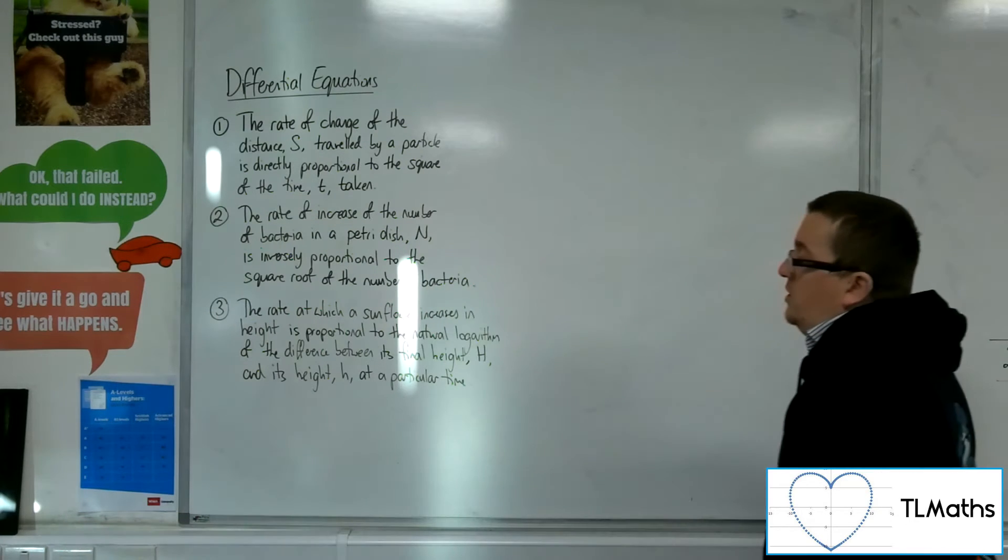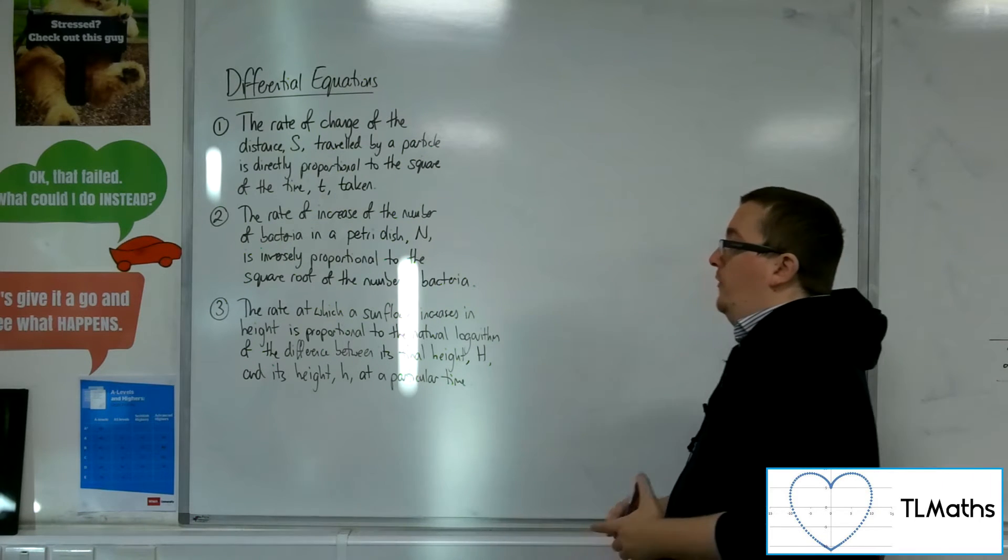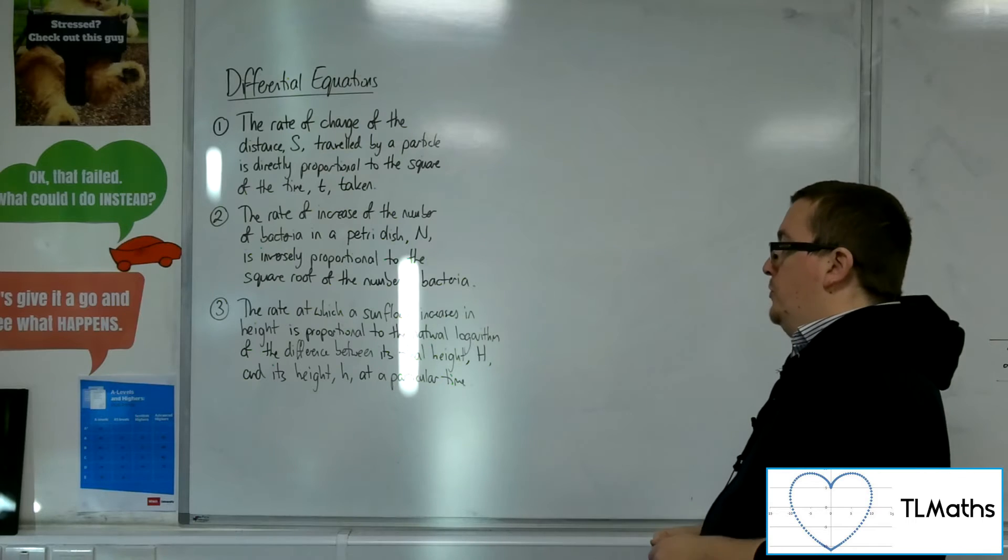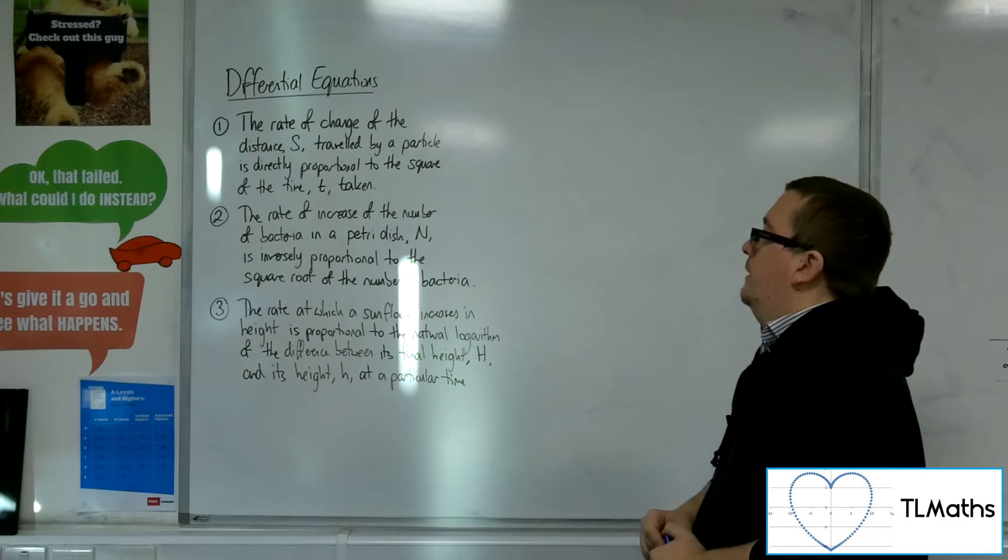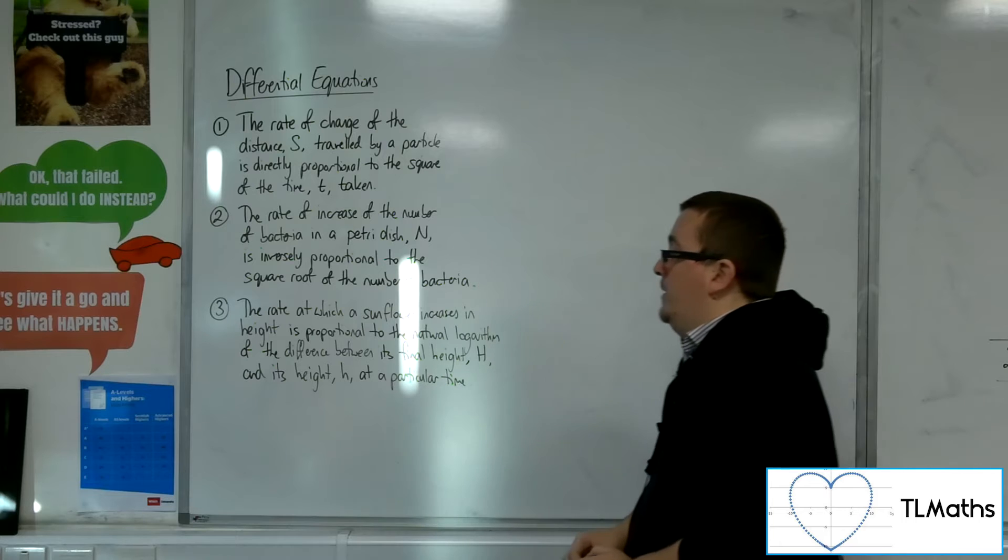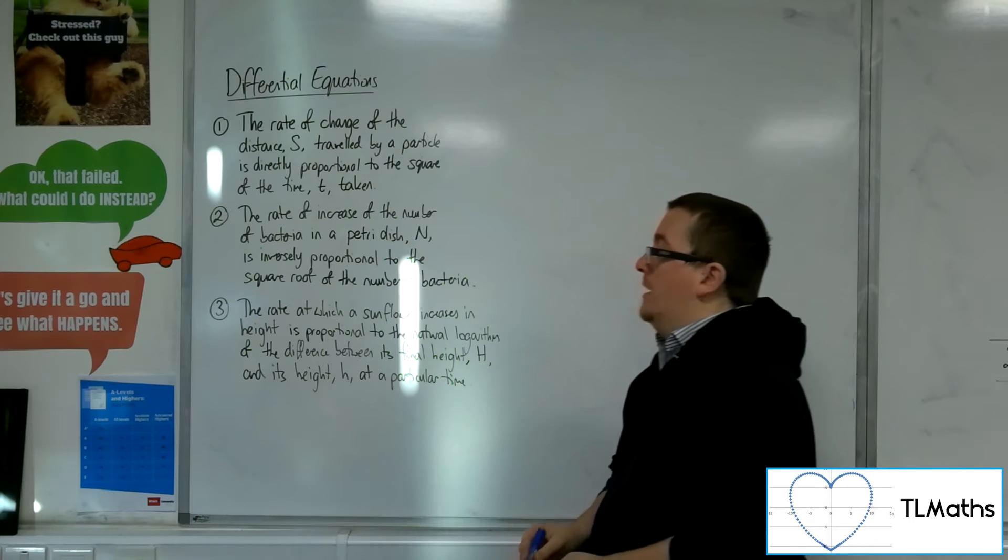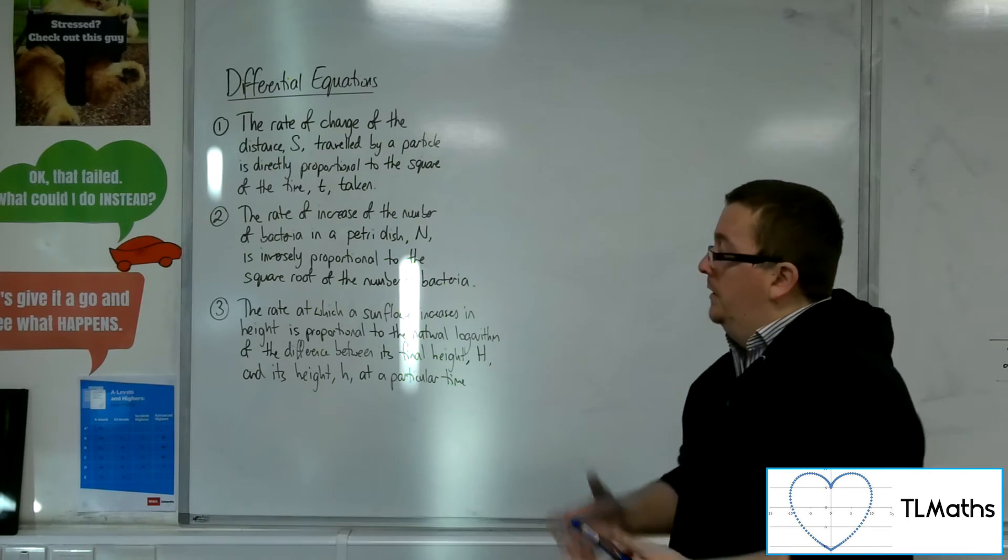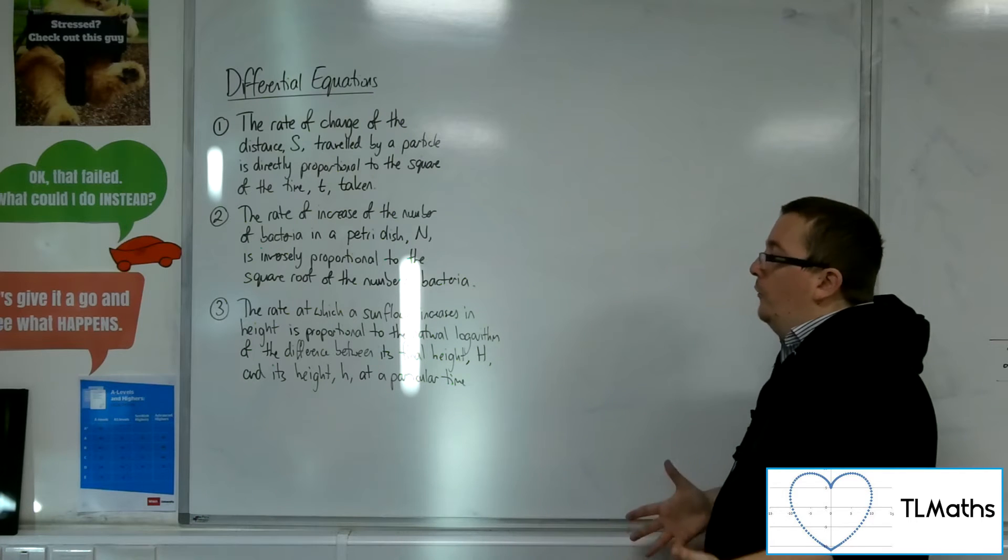Number three, the rate at which a sunflower increases in height is proportional to the natural logarithm of the difference between its final height, capital H, and its height, lowercase h, at a particular time. Right, there's a lot of stuff there.